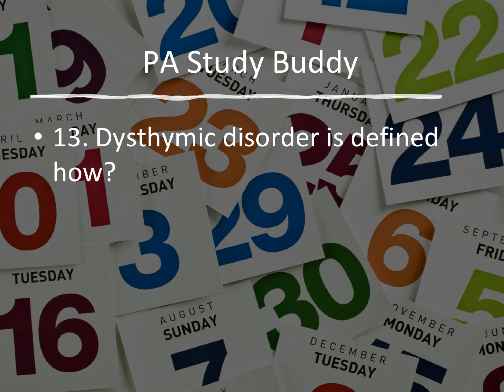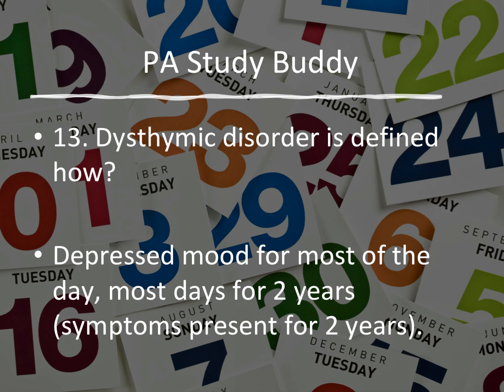Question thirteen: dysthymic disorder is defined how? They'll tell you this patient has depressed mood for most days, pretty much every day, for the last two years. Symptoms must be present for two years. Dysthymic disorder has the longest time requirement — two years. Everything else will be less. If you see dysthymic disorder, think two years.